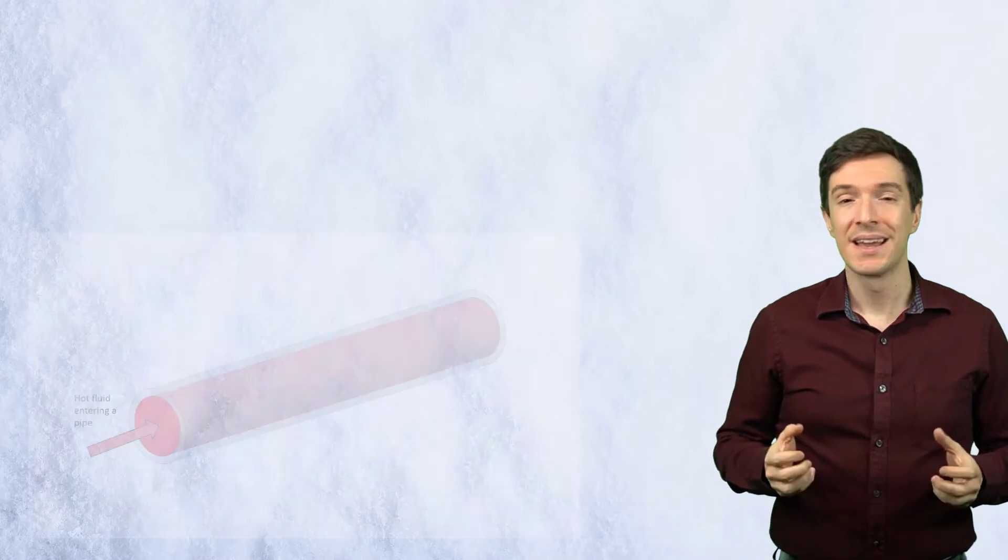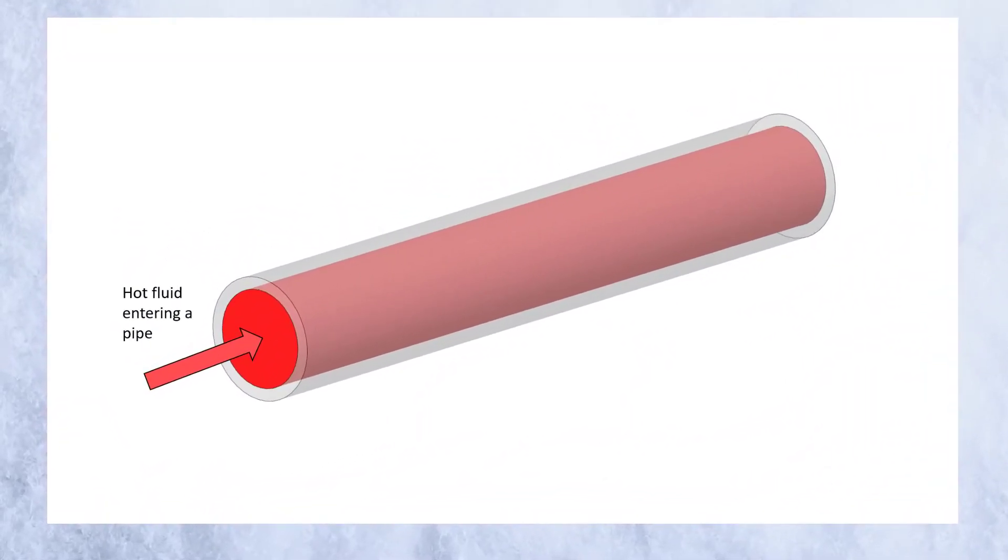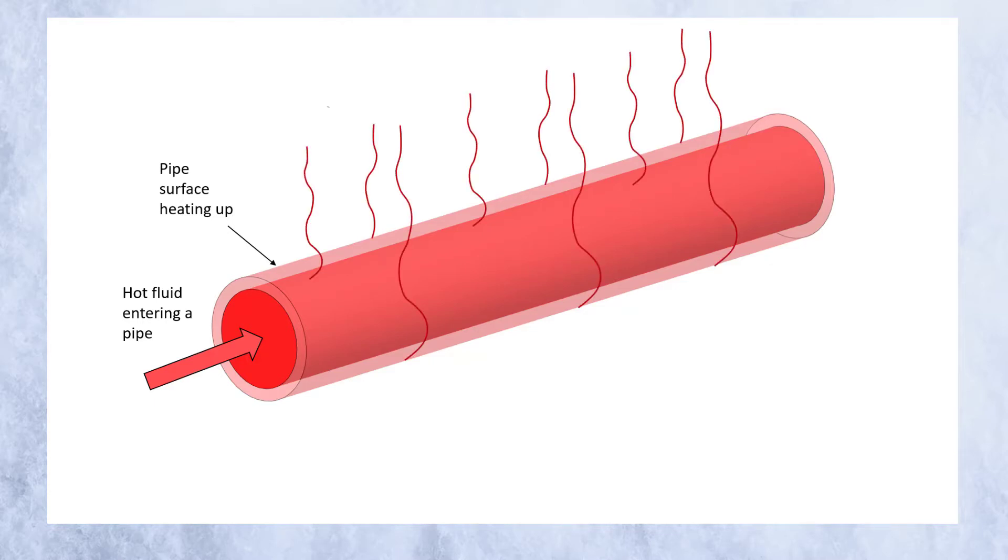As a heating fluid moves through pipes, it warms the pipes and increases their temperature above the ambient temperature. This causes the pipe to start exchanging heat with the surrounding air, mostly through external natural convection for large Rayleigh numbers.